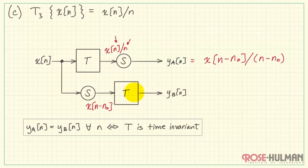Now here, we see that X is X of n minus n0, because that's our input. Then the system acts to divide whatever it sees on the input by n.